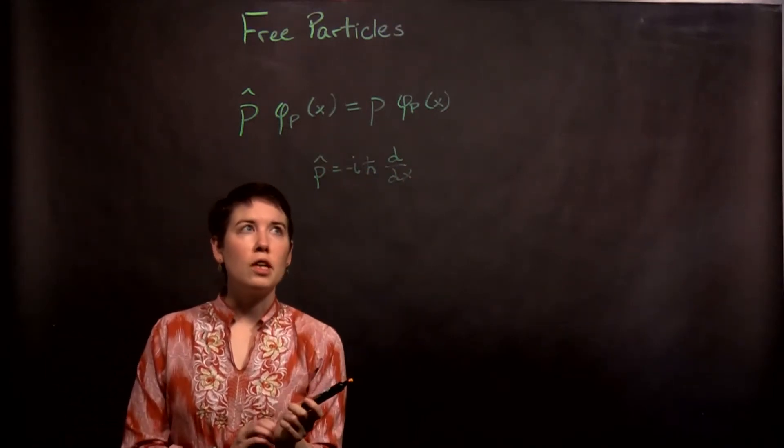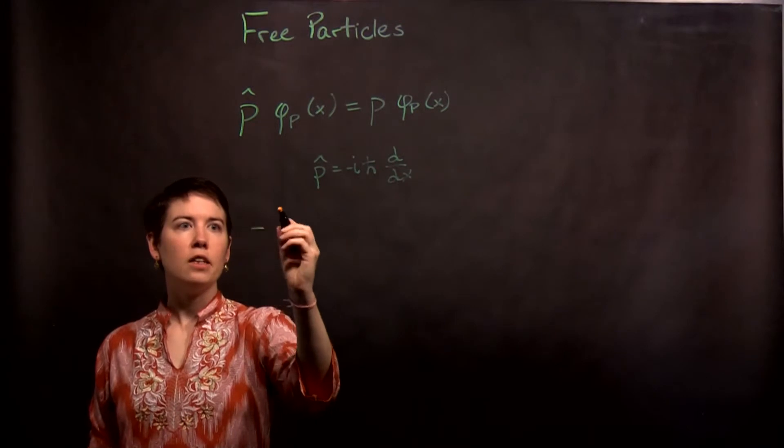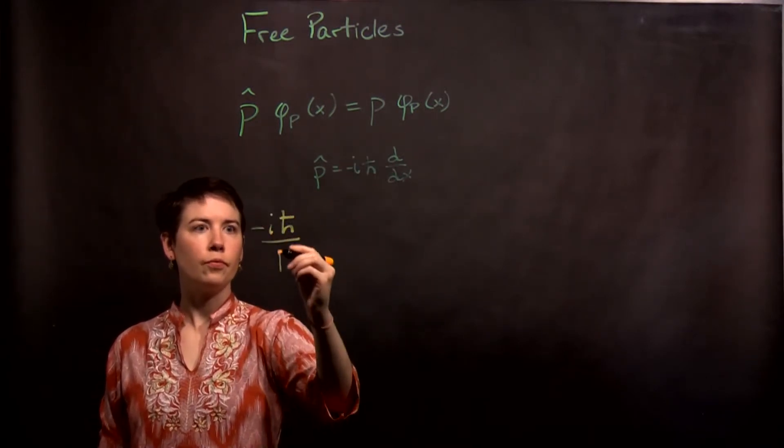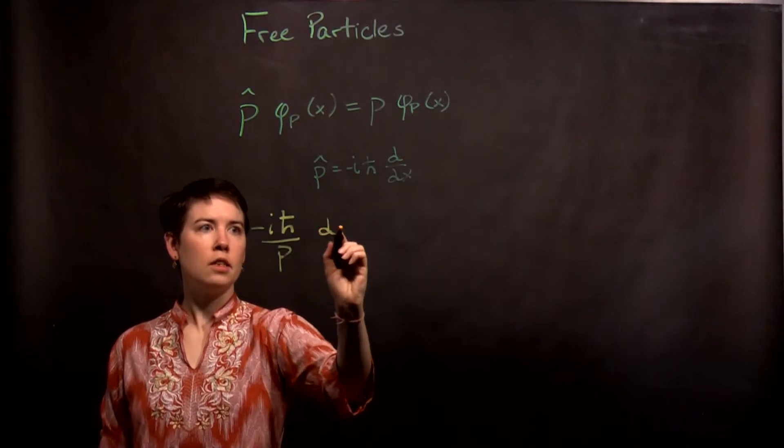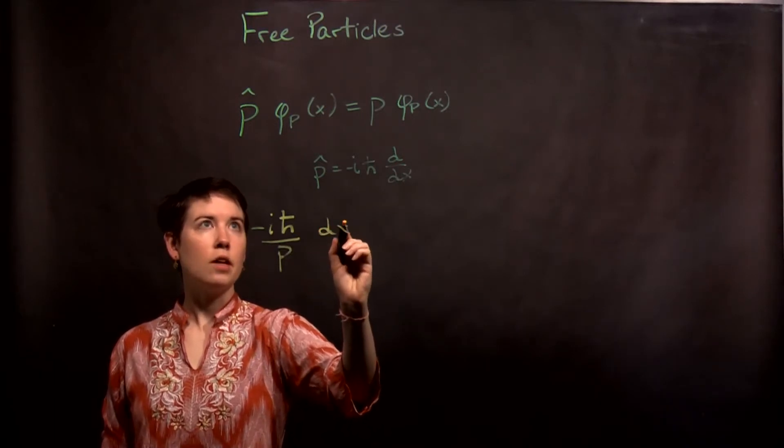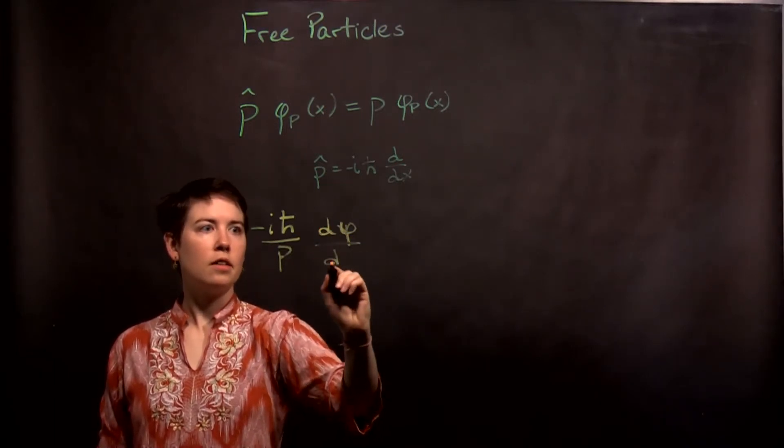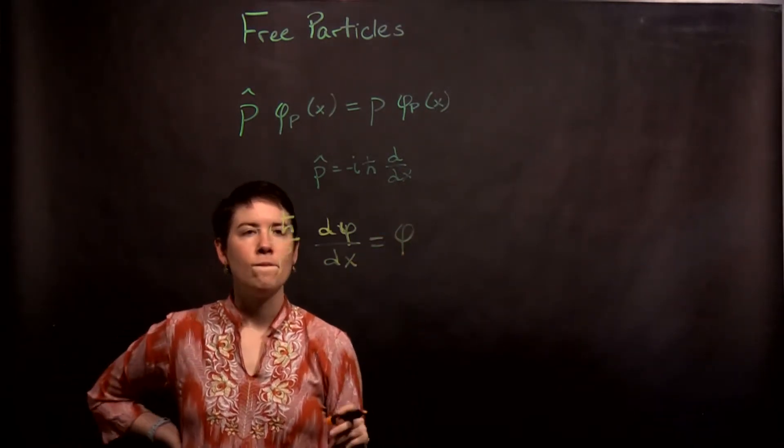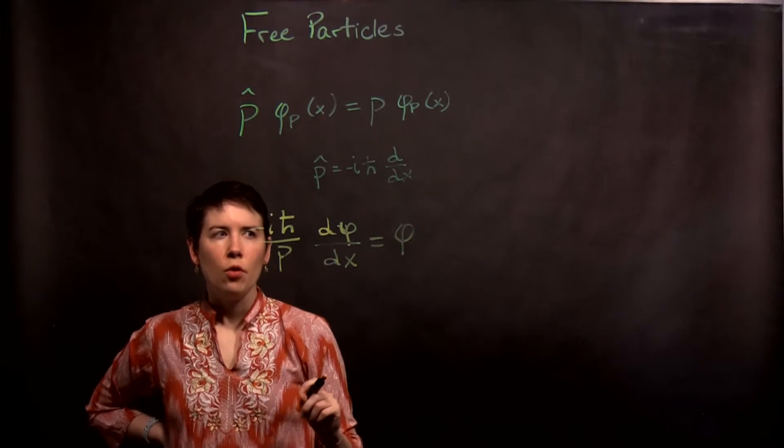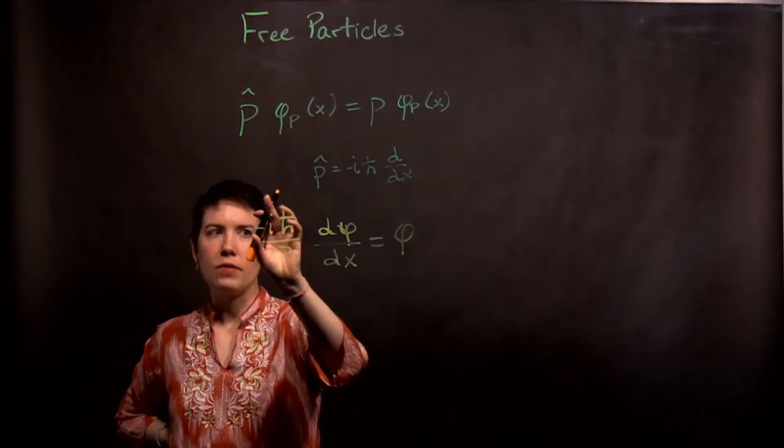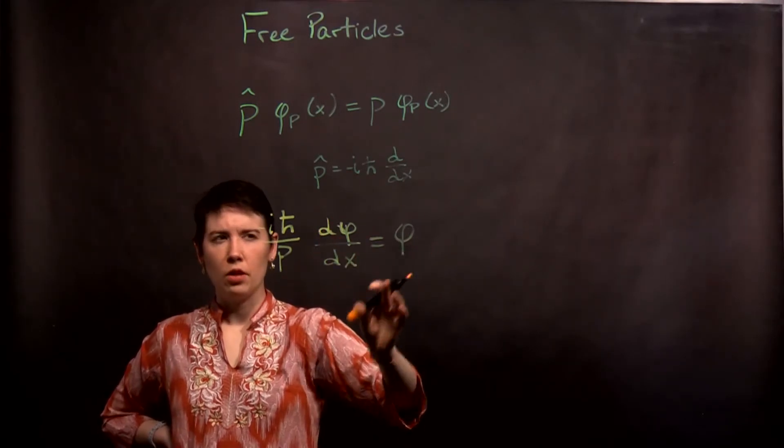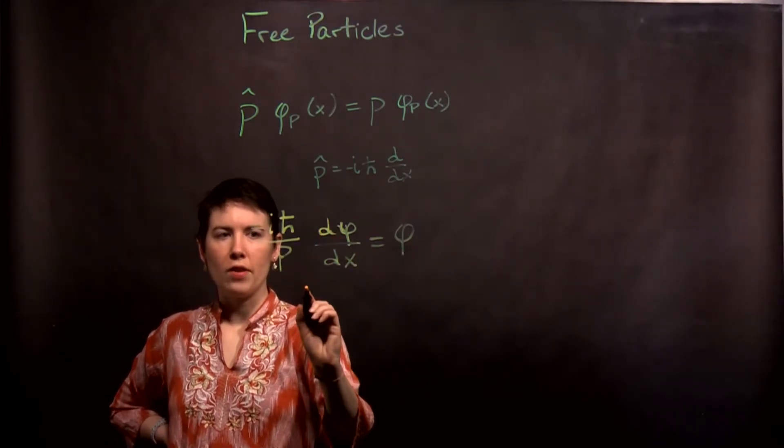So if we think about it this way, I'm going to say that I have negative i h-bar, and I'm going to bring P over, over P, d... I've already messed this up. d phi dx equals phi. So notice that in this case we have a scalar value times the derivative equals the function itself.